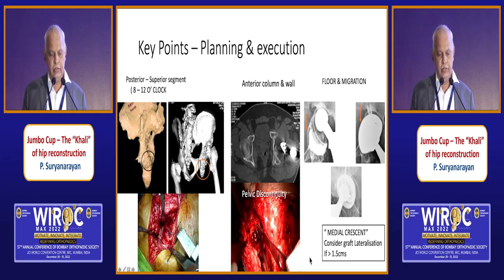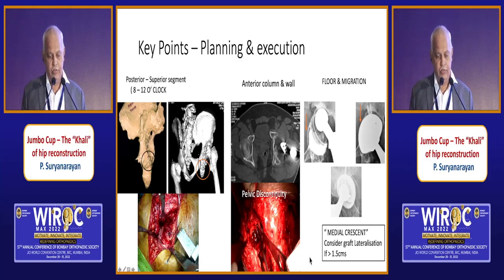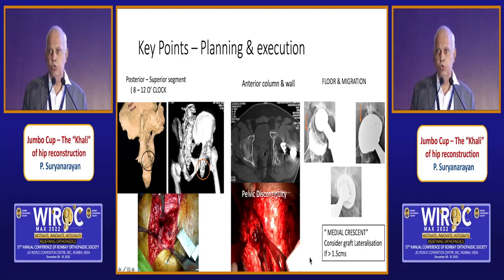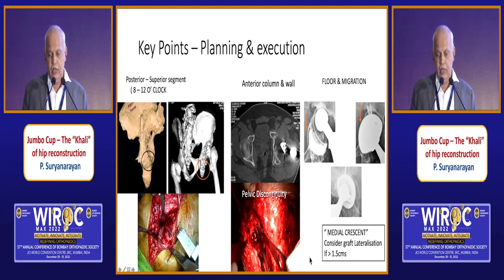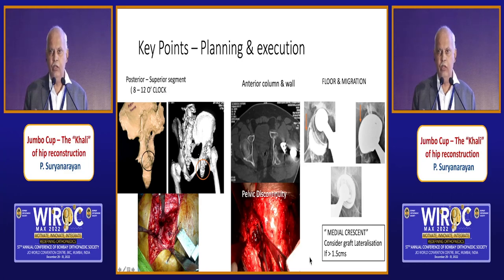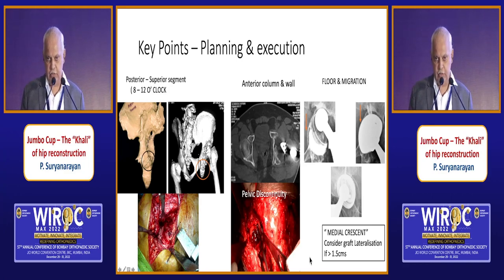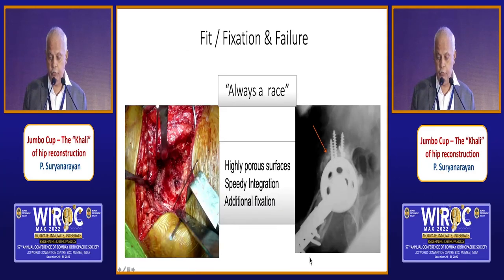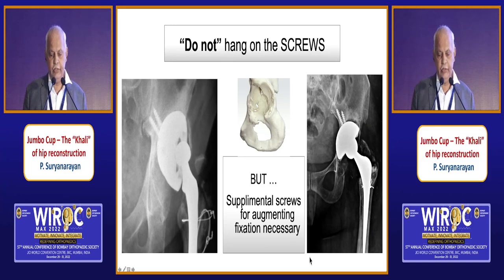Anterior column and anterior wall deficiencies usually do not pose a problem; superior and posterior-superior segments allow good fixation. For floor migration, only consider a graft if you need to lateralize completely. When there is a small crescent on the medial wall, expand the cup as much as the columns allow and cover the rest with graft. Always use highly porous cups for speedy integration. Accessory augmented fixation with screws is often crucial.